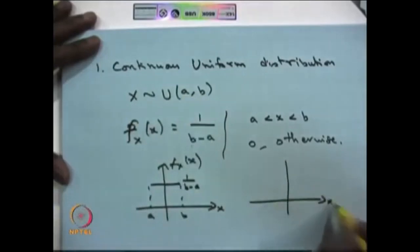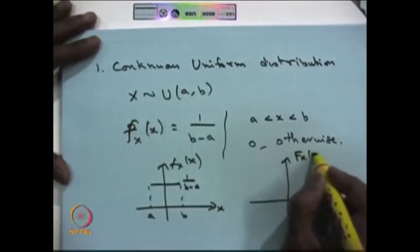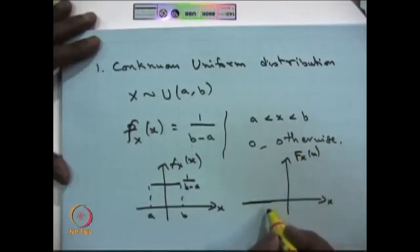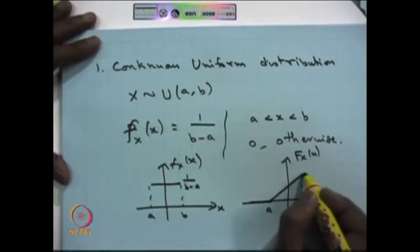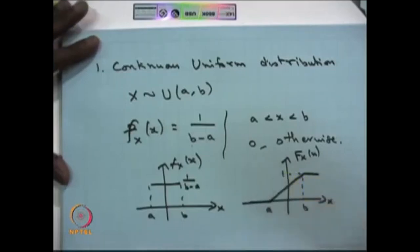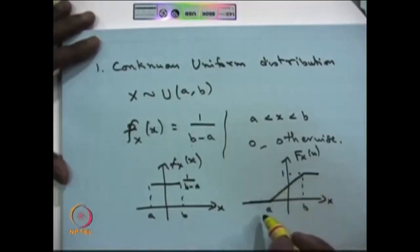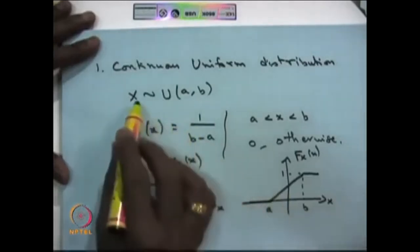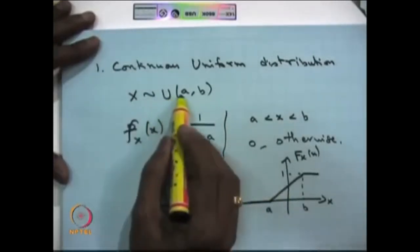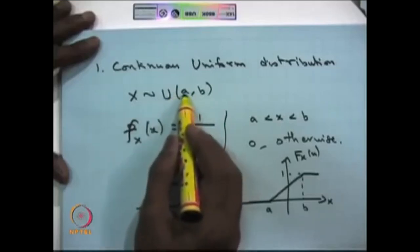Looking at the CDF of this random variable: up to point a it is 0, then after a it increases linearly, and at point b it reaches 1. If any random variable's CDF goes from 0 to 1 linearly over the interval a to b, you can identify a and b and conclude that it is a continuous uniform distribution between a and b.